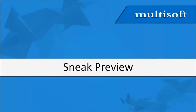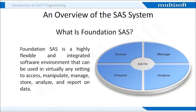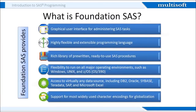Now it's time for the sneak preview, where we will cover the main architecture of the SaaS environment. SaaS is run through Foundation SaaS, which is the basic component used to compile and run SaaS code. Foundation SaaS is a highly flexible and integrated software environment that can be used in virtually any setting to access, manipulate, manage, store, analyze, and report on data. It is a graphical user interface used for administrating SaaS tasks and a highly flexible and extensible programming language. Foundation SaaS also has a rich library of pre-written, ready-to-use SaaS procedures.